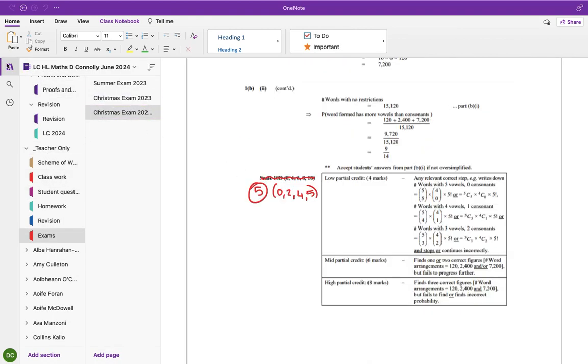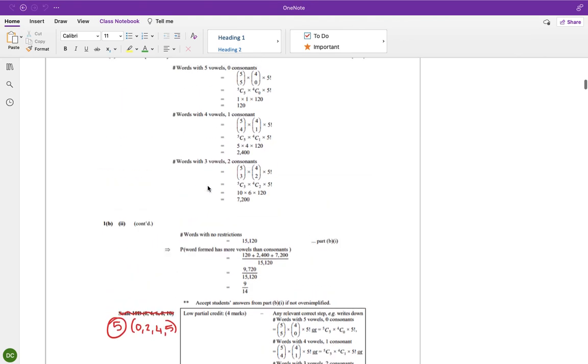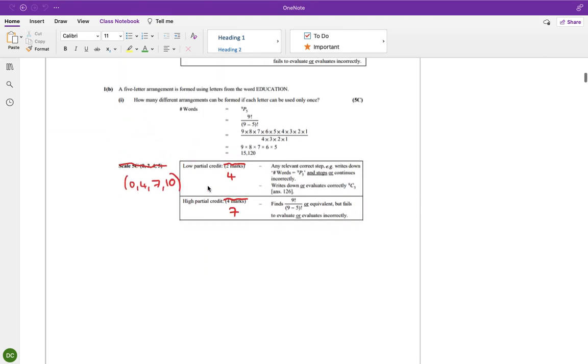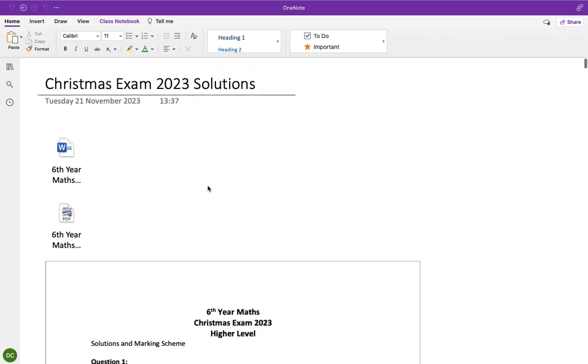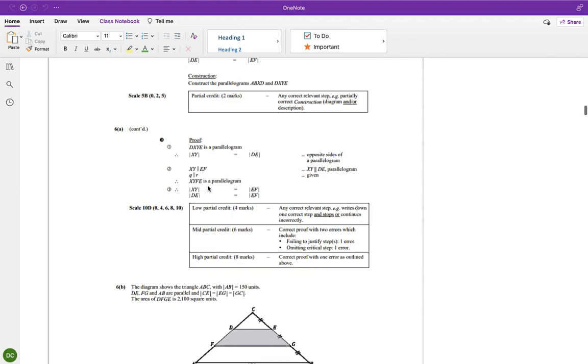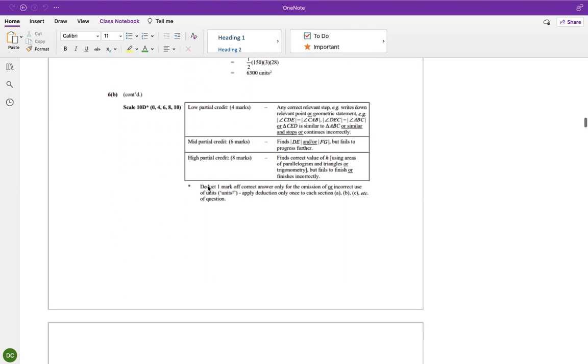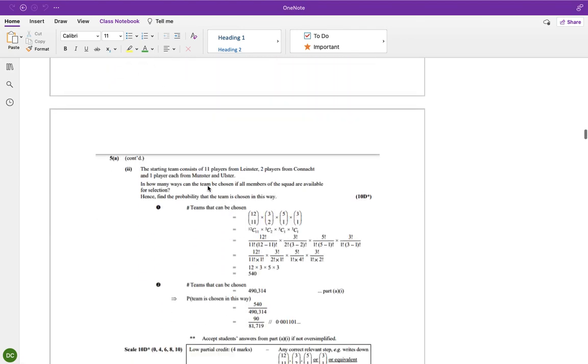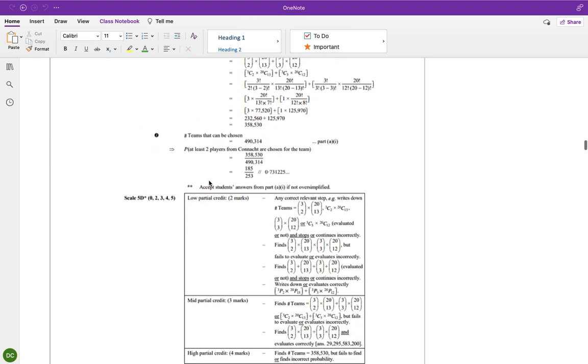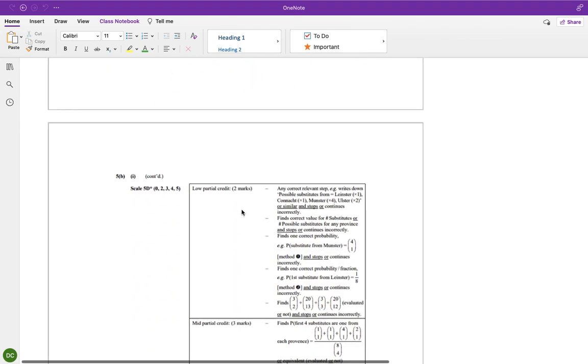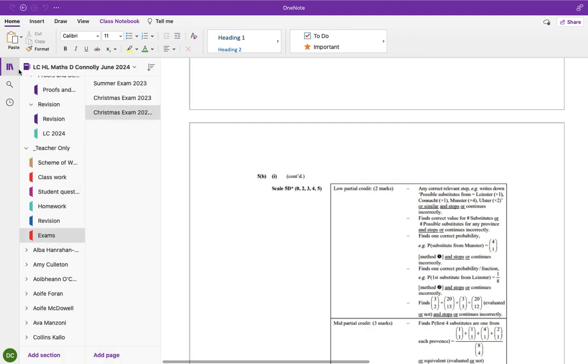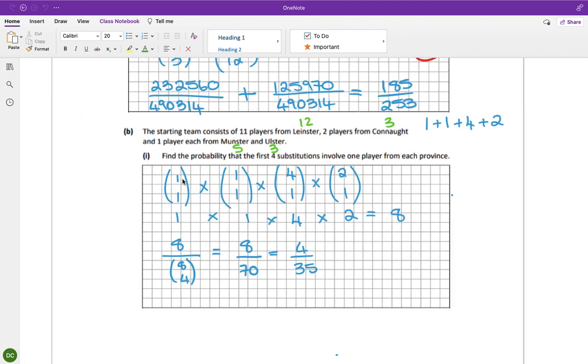Marking scheme. I don't know where I am. Where am I? I've gone past all that. So we did that, we did that. So here. So four over 35, five marks.